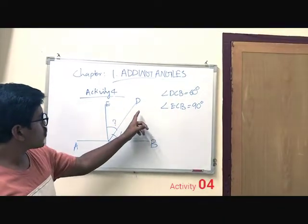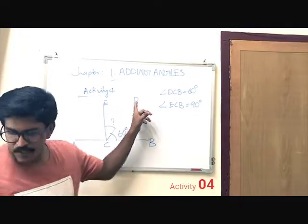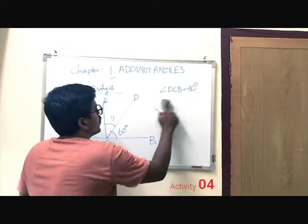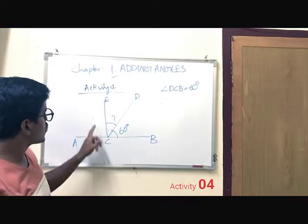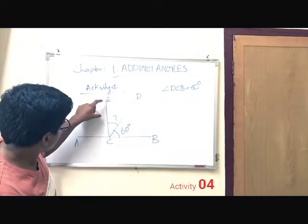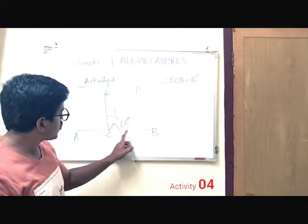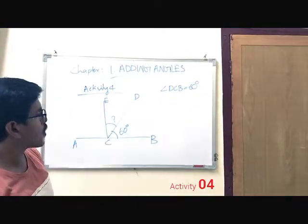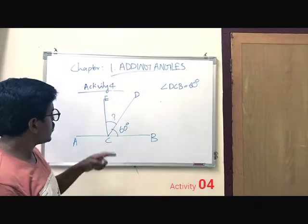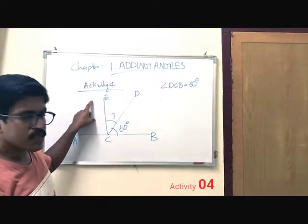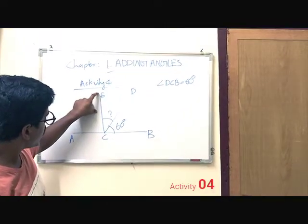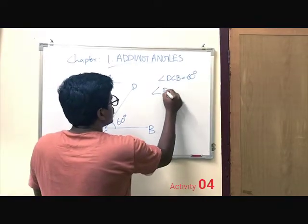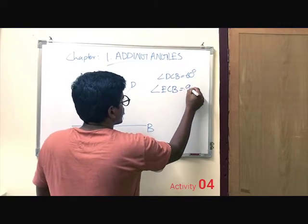In this activity, you can see angle D, C, V equals 60 degrees. And the line E, C and line C, V are perpendicular, so the angle between the two perpendicular lines is 90 degrees. We already discussed that, so angle E, C, V equals 90 degrees.